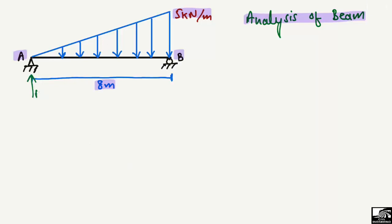At support A we have reaction RA, and at support B we have reaction RB. Since there is no horizontal load on the beam, the hinge support cannot take any horizontal reaction.